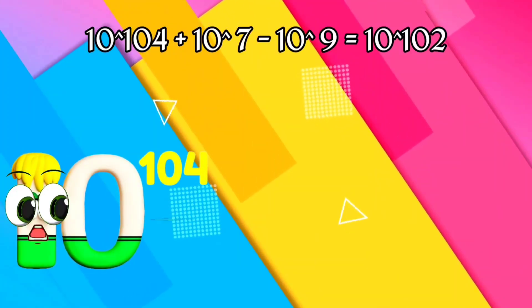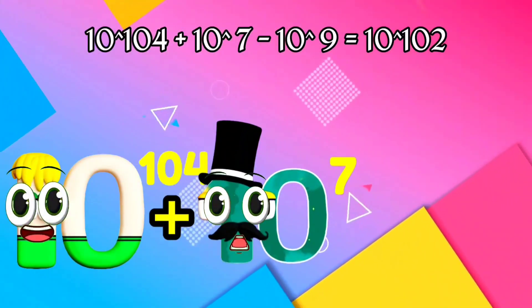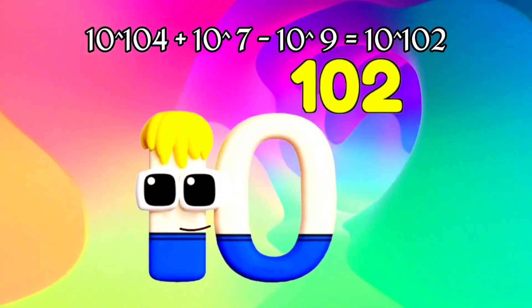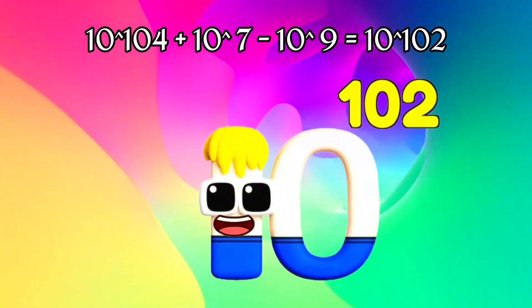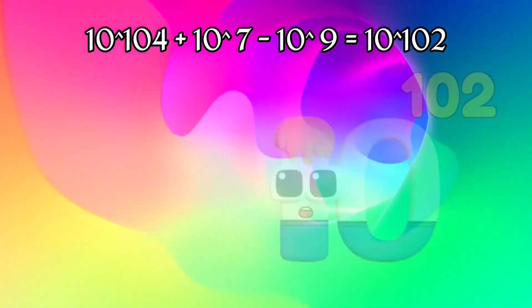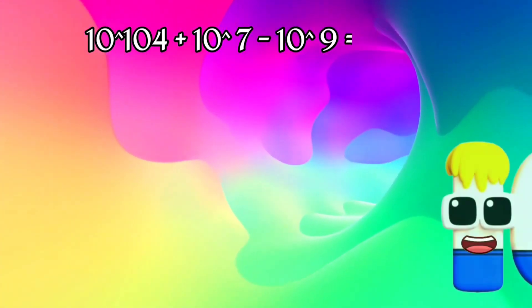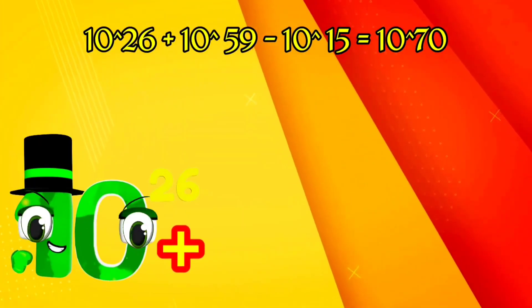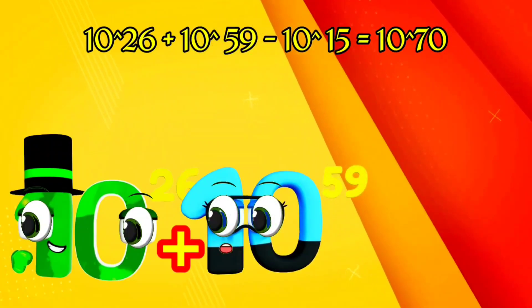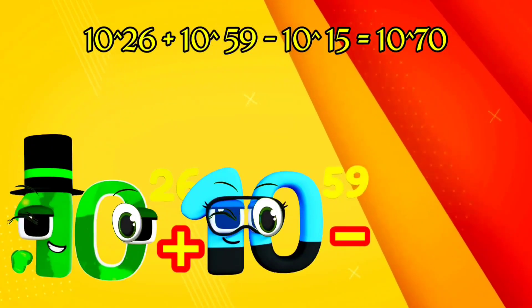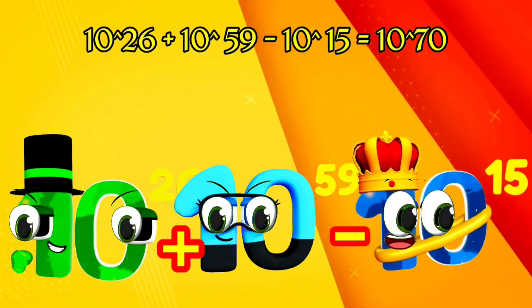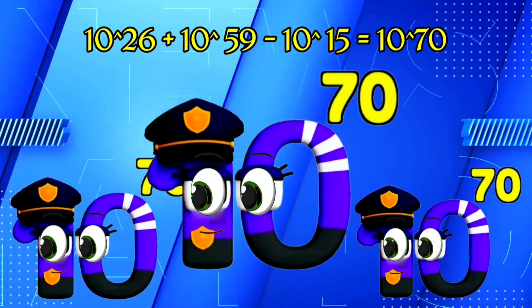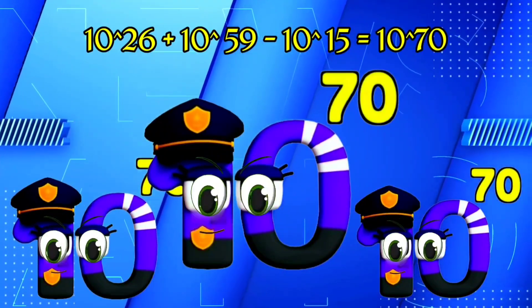I am Googol with 100 zeroes. I'm 1,000,000 and I'm 1,000,000. Equals I am Googol with 100 zeroes. 100 septillion. Plus 100 octodecillion. Minus I'm quadrillion and I've got 15 zeroes. Equals I'm Quatuorvigintillion and I have 70 zeroes.